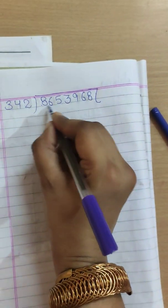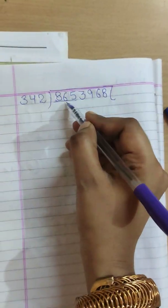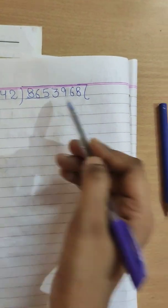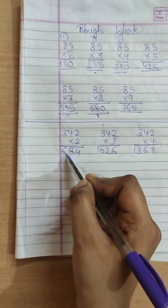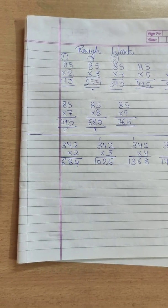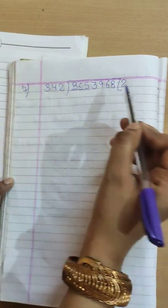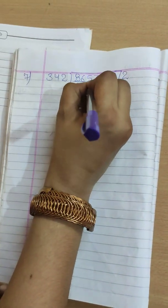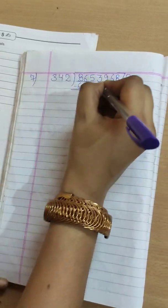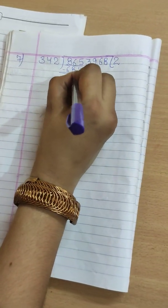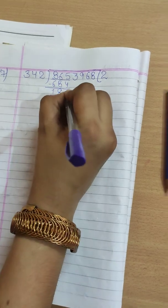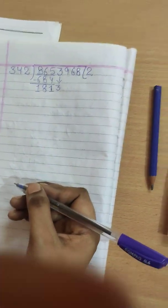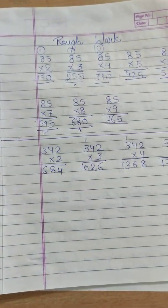So here I have made the table of 342 in our rough column. Let's solve it in our notebook, rough notebook. So 342 divided with the given number. So we will in starting we will take three digit number because then only it will divide it. 865 is not there. So we will take a number which is smaller.